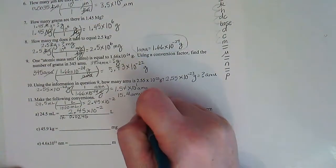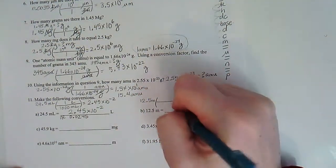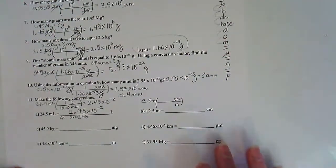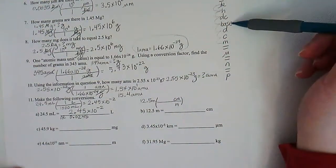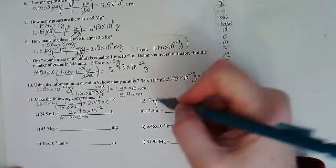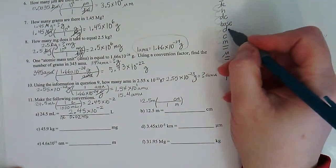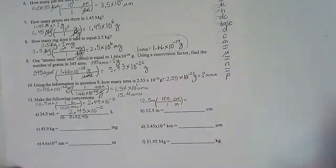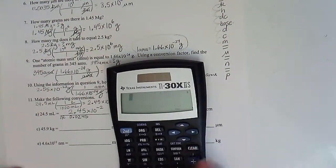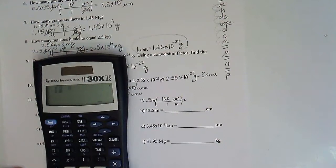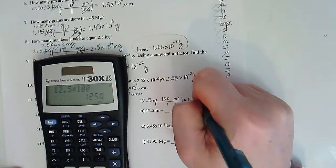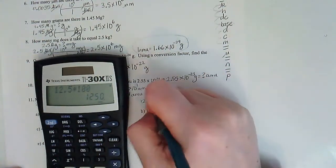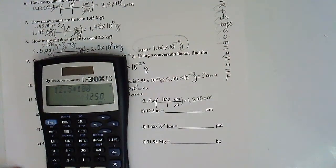Part B: 12.5 meters to centimeters. I start with 12.5 meters. Meters to centimeters — meters is my base, here's centimeters. Meters is larger; it's 1, 2 — so 100. I should multiply this time. 12.5 times 100 equals 1,250 centimeters.